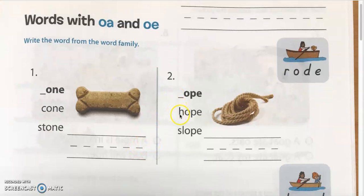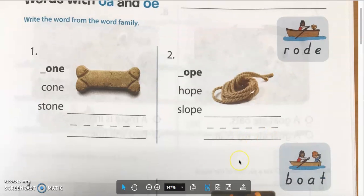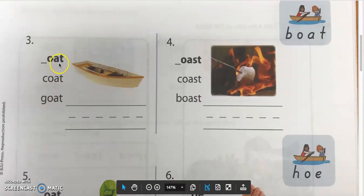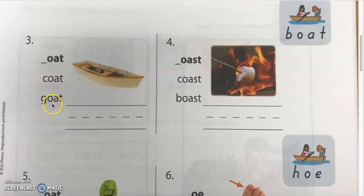Number two, we have OPE: H-OPE, hope; SL-OPE, slope; and the picture we have R-OPE, rope. Number three, OAT: K-OAT, coat; G-OAT, goat; and the picture looks like it's a boat — B-OAT, boat.